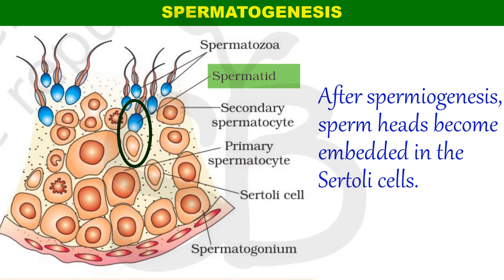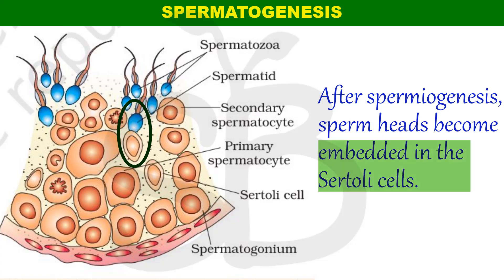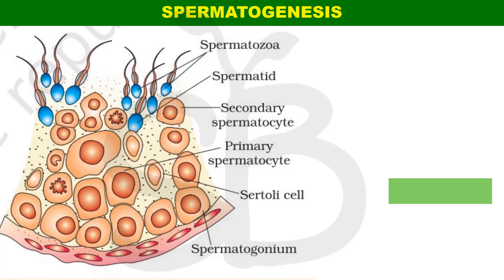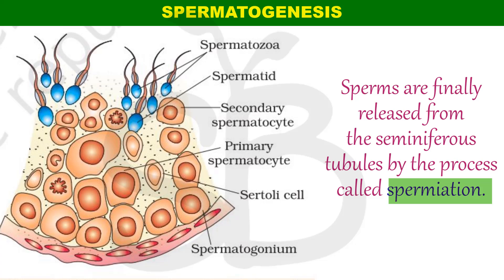The spermatozoa can be attached to Sertoli cells. Why? Because Sertoli cells are nutrition providers. The spermatozoa are embedded in the Sertoli cells, which have a head, a middle piece, and a neck. The head is attached to the Sertoli cell. The spermatozoa can be released into the seminiferous tubules, and upon release, the spermatozoa detach from the Sertoli cells.